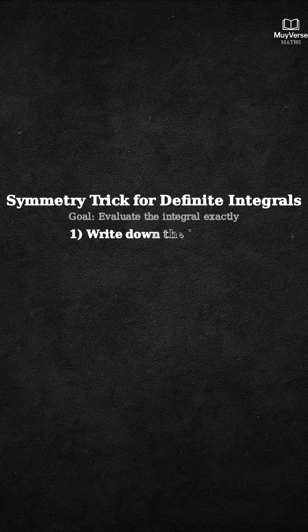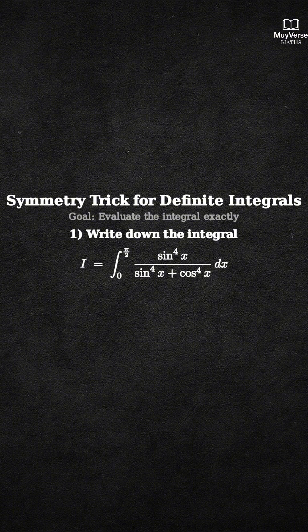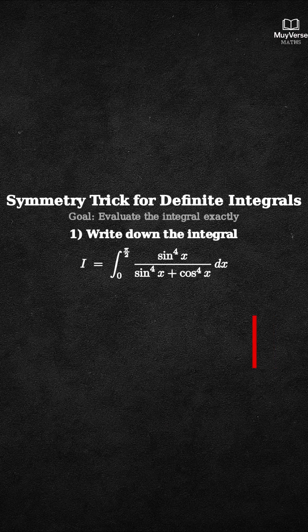Step 1: Write down the integral I. I equals the integral from 0 to pi over 2 of sine to the 4th of x, over sine to the 4th of x plus cosine to the 4th of x, dx. We will keep this expression in view as the target.